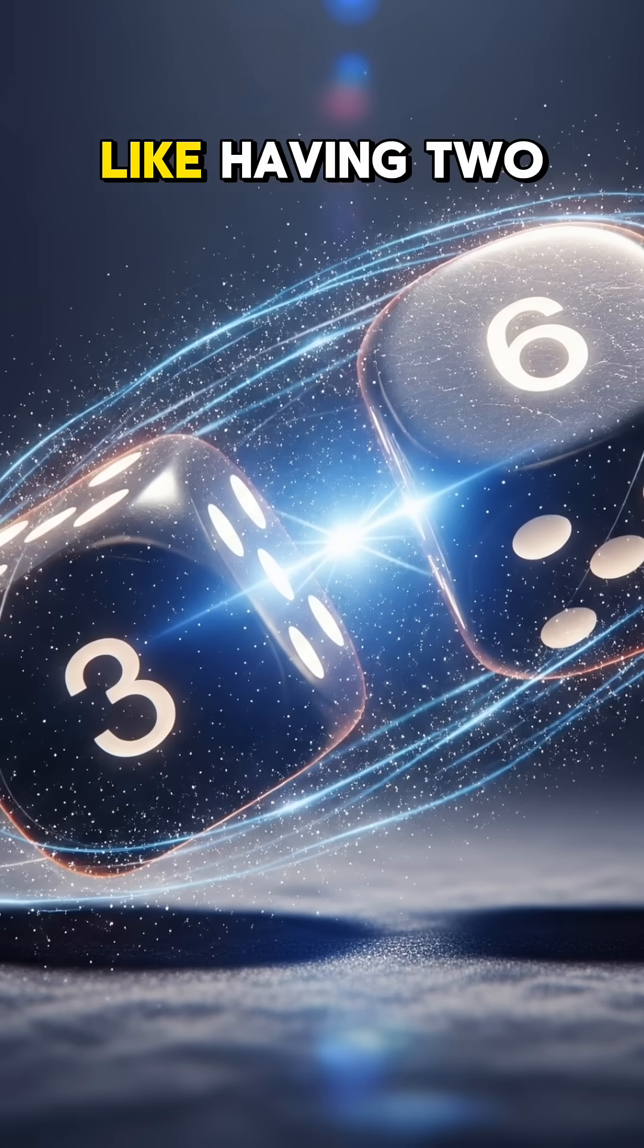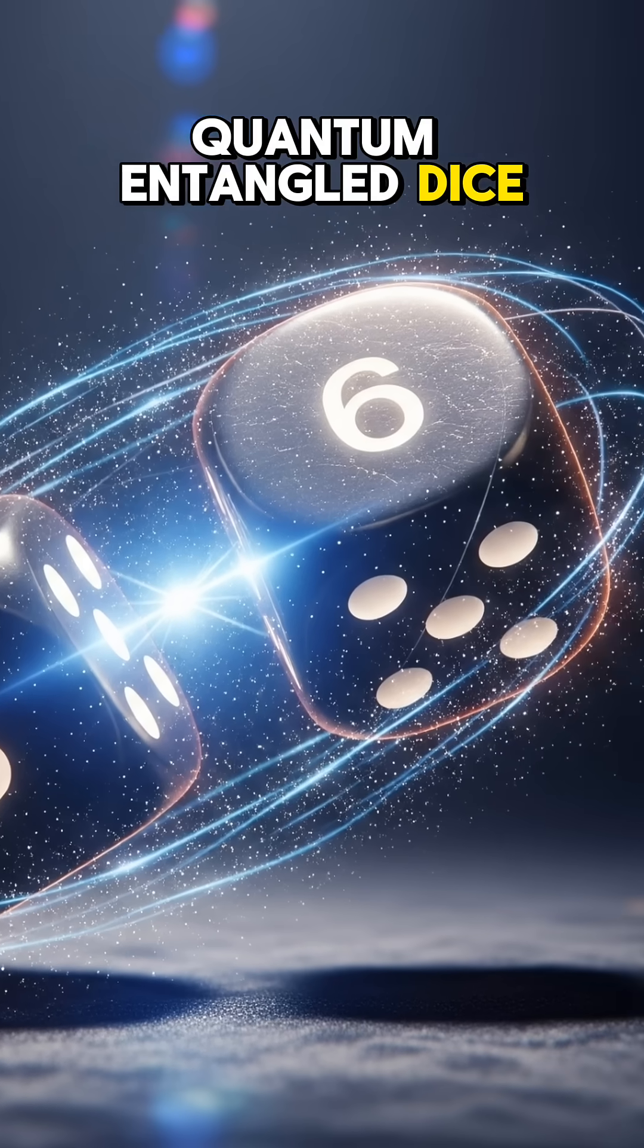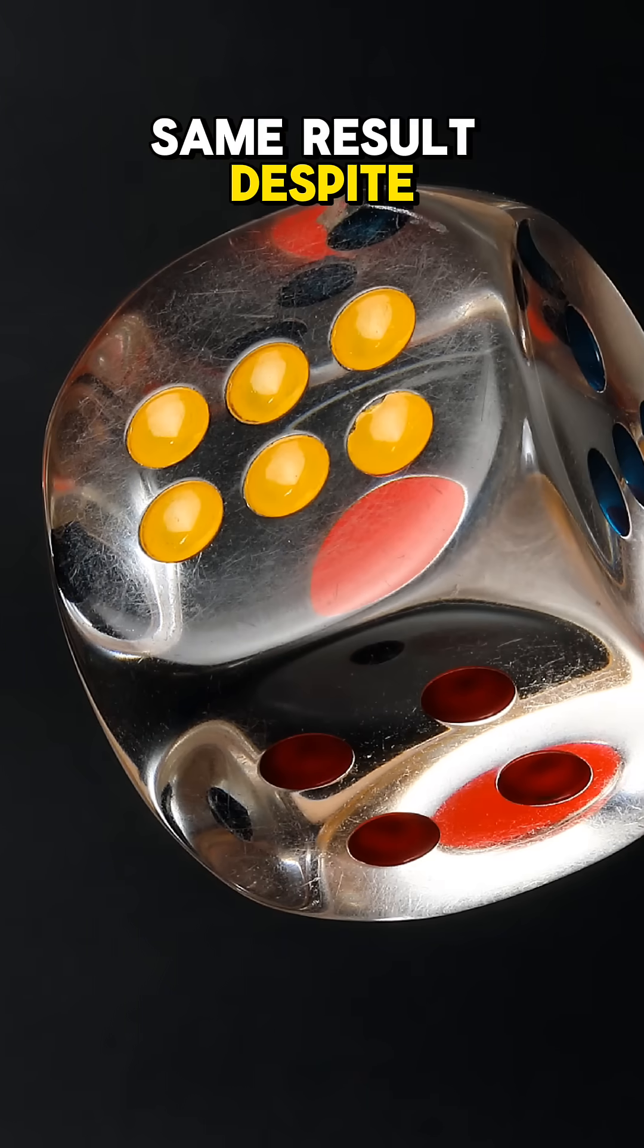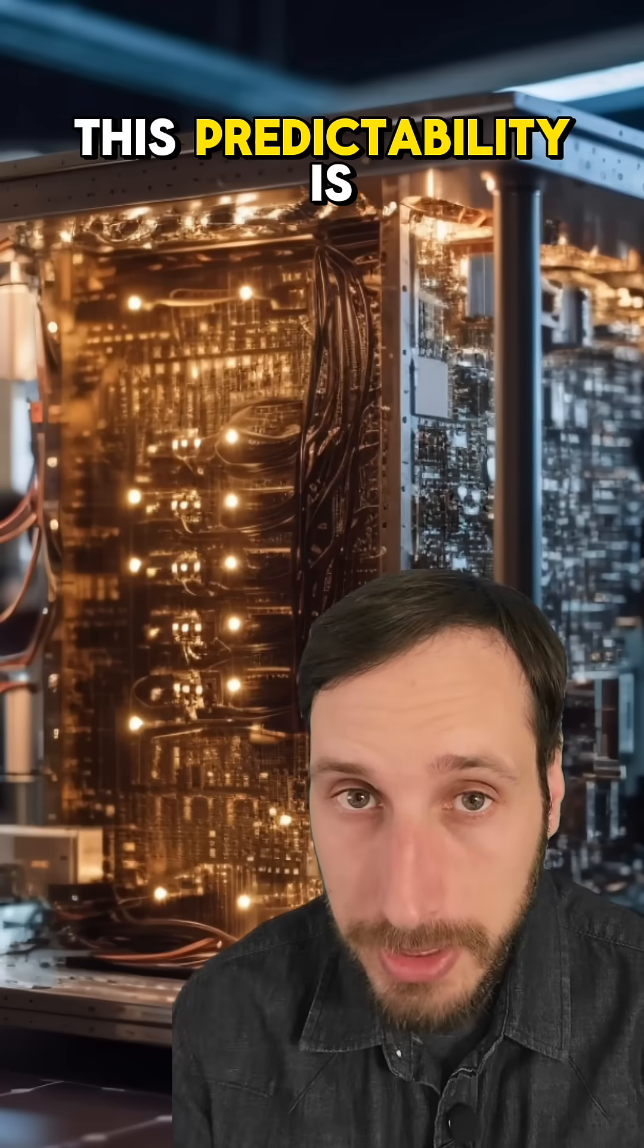In more simple terms, that would be like having two quantum entangled dice, so if you roll one and get six on one end of the room or the universe, the other one will show the same result despite the distance. This predictability is the cornerstone of technologies such as quantum computing.